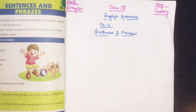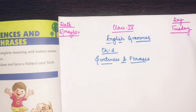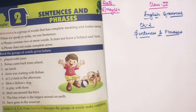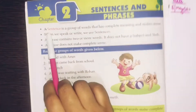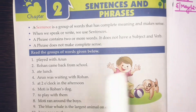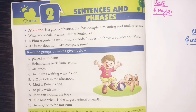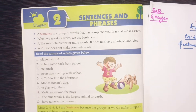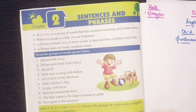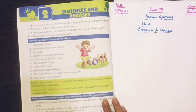Good morning, Class 4! Do you remember in our last lesson we read about sentences? I told you that a sentence is a group of words that has complete meaning and makes sense. When we write some words together and there is a meaning, we write a sentence. Short word groups that have meaning but are not complete sentences are called phrases. Do you remember? Very good.